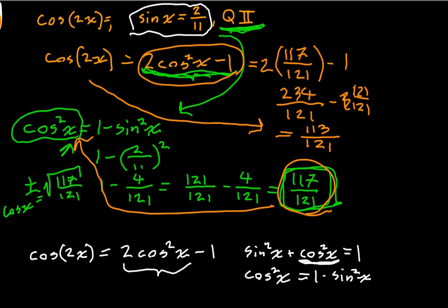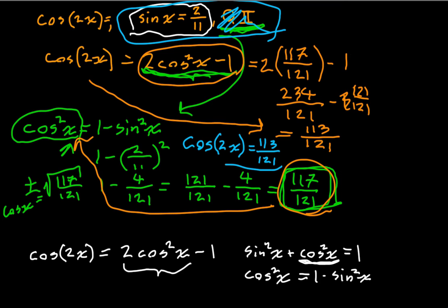Let's write this out in a finalized form. We learned that the cosine of 2 times our angle x, which we never figured out, is going to be equal to 113 over 121. That's less than 1, so that's actually possible. You can verify this on a calculator. If you just want to take the arc sine of 2 over 11, multiply that by 2, and take the cosine, that should give you the correct answer.